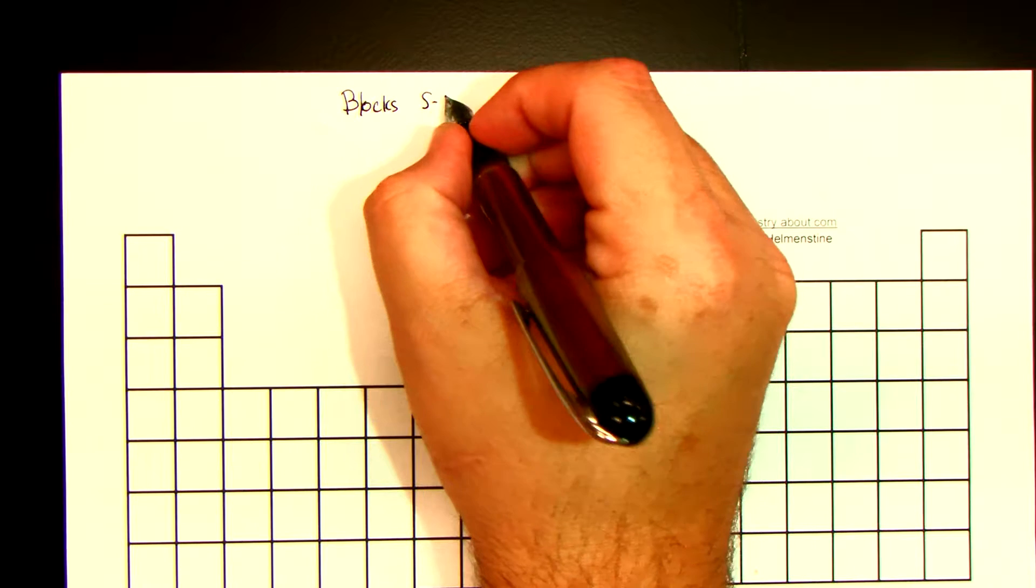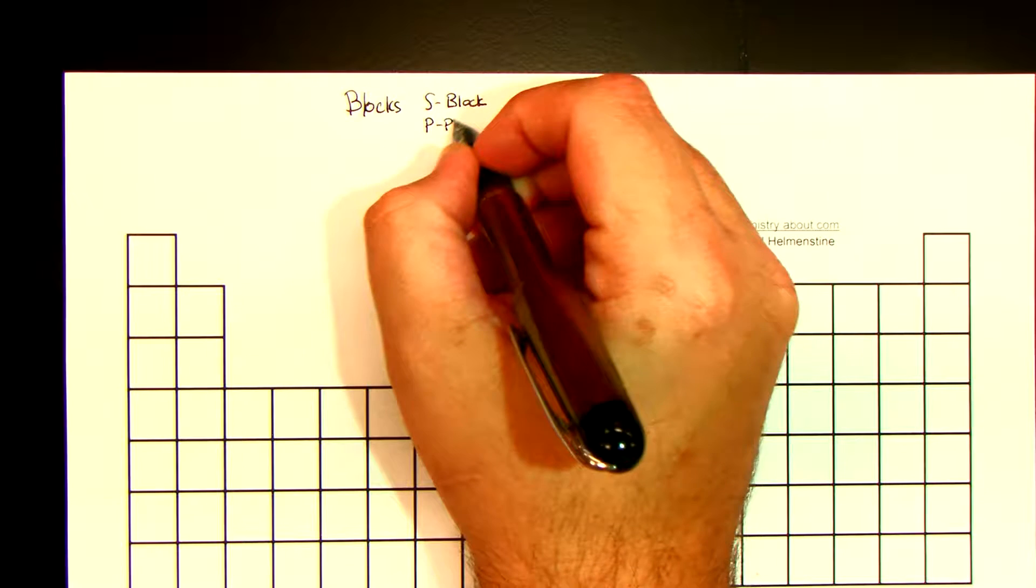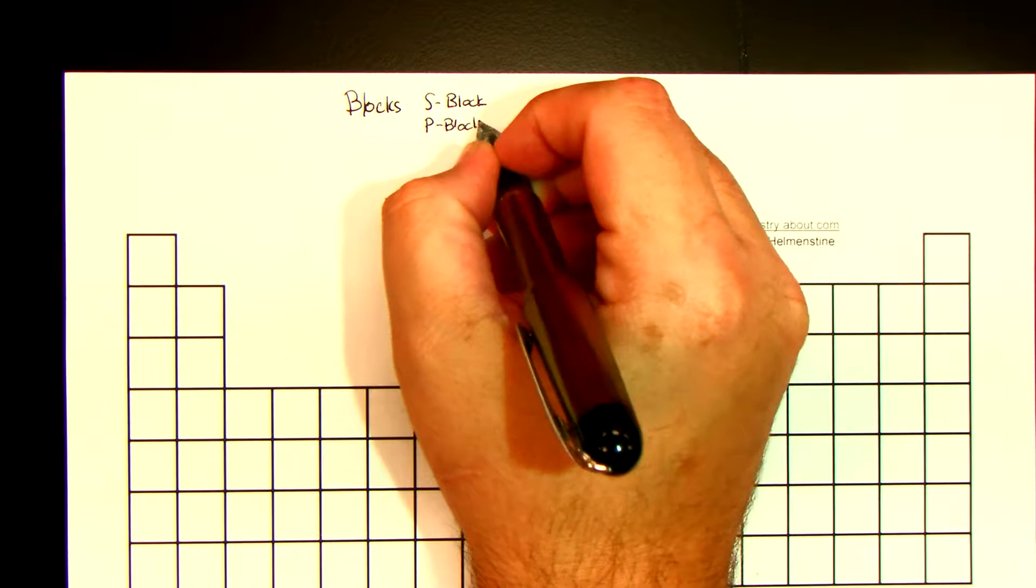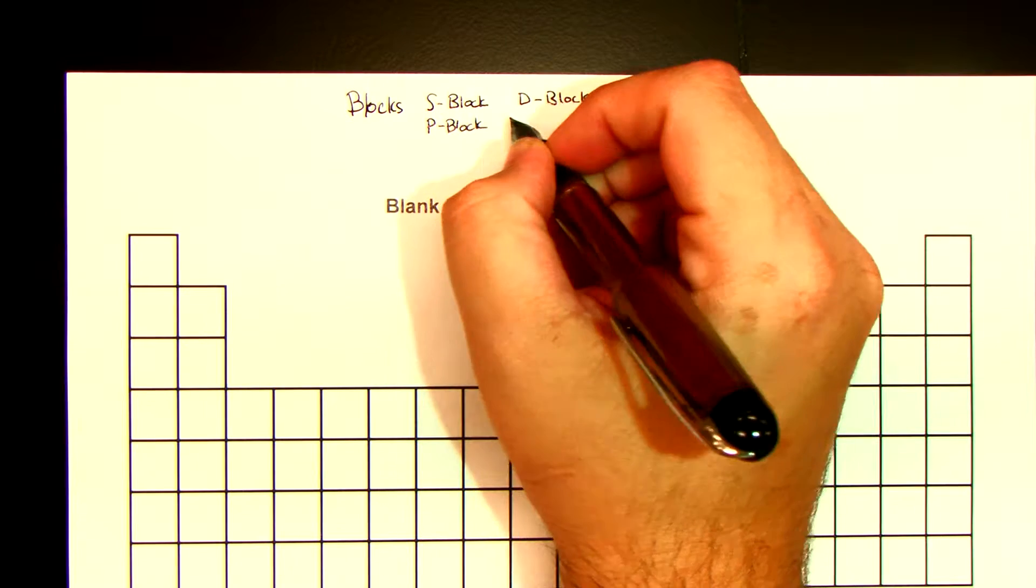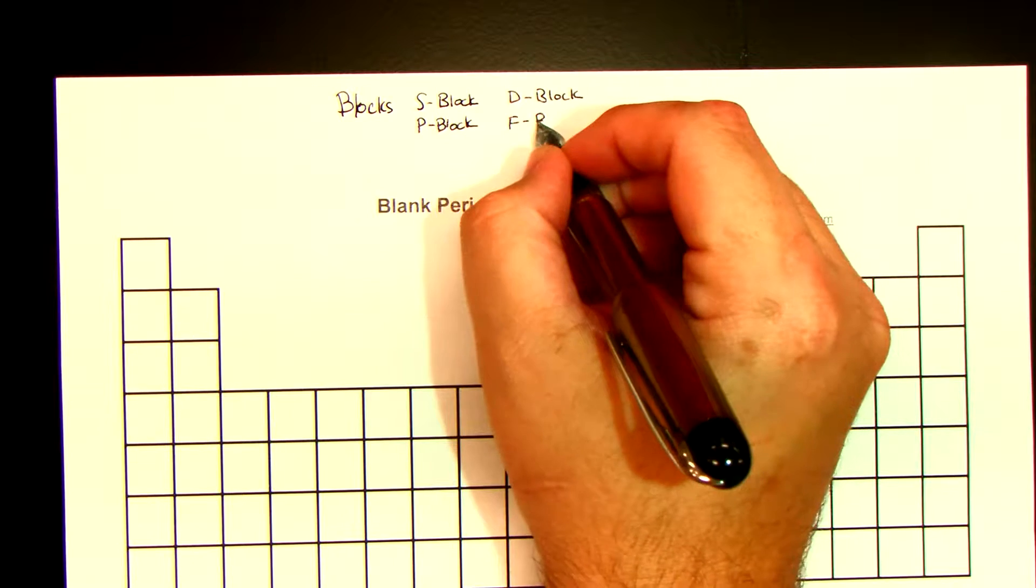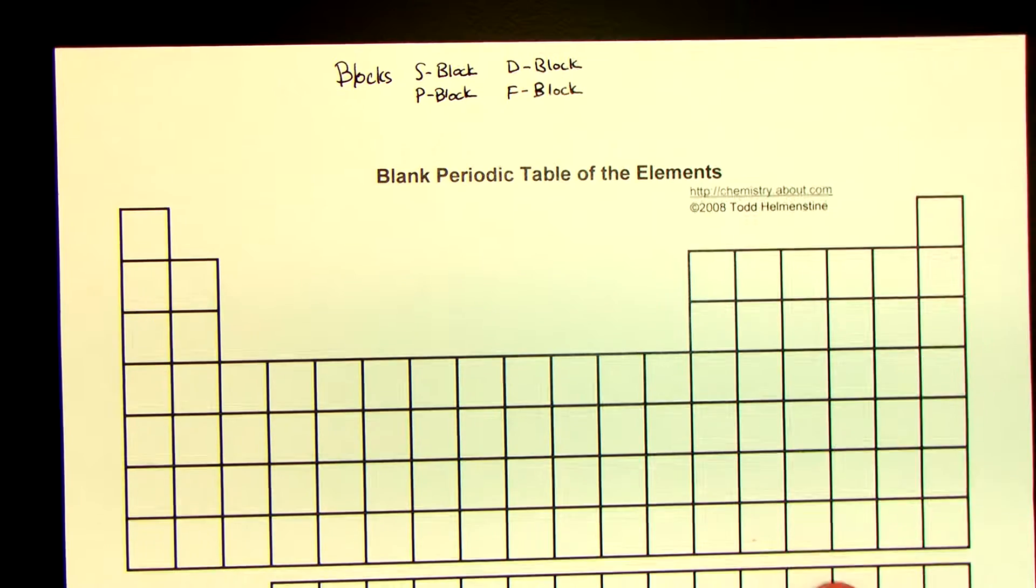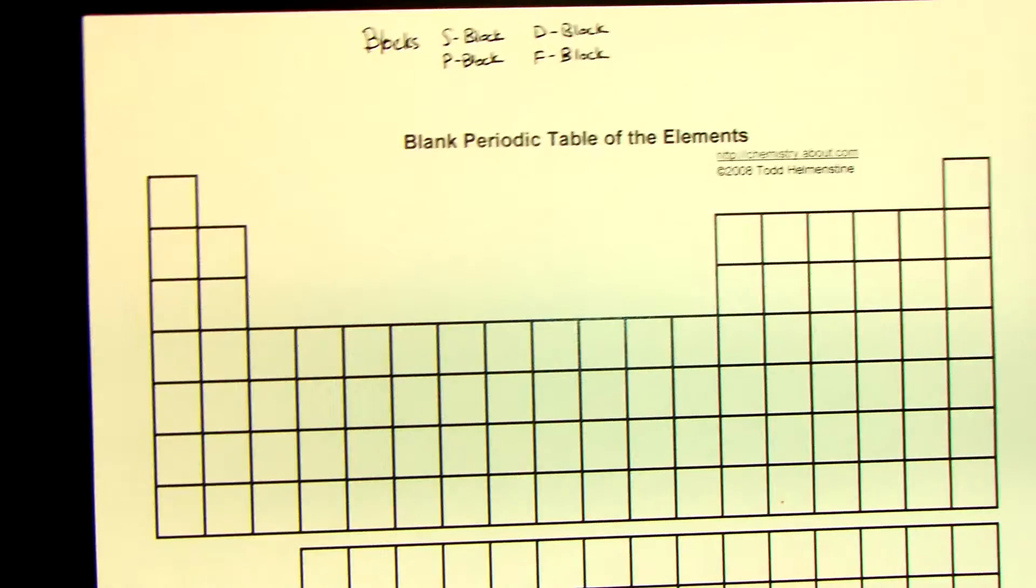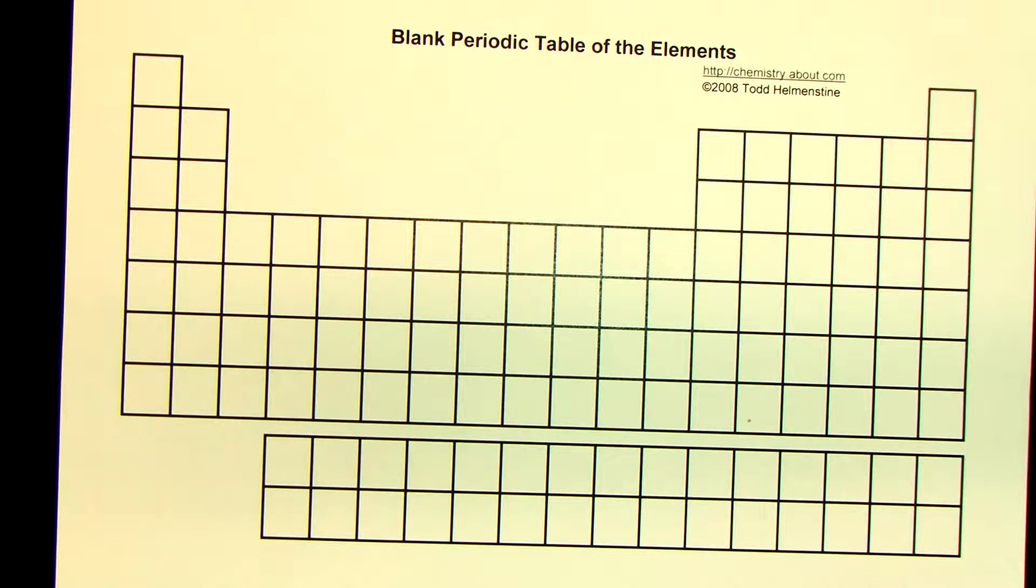There's something called an S block. There's a P block. There's a D block. And there is an F block. So there are four different blocks. And when we get into different things like electron configuration and all sorts of craziness like that, we will talk more about what is represented by these blocks themselves.